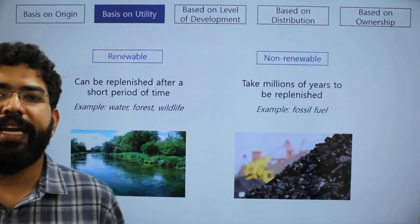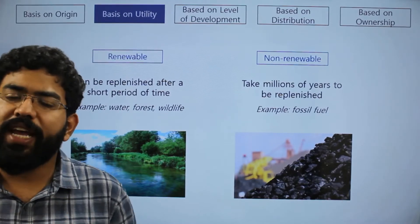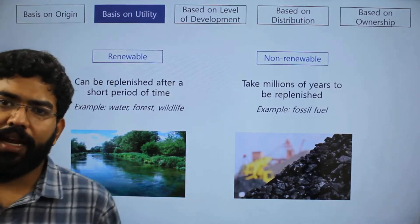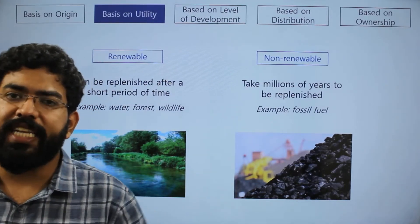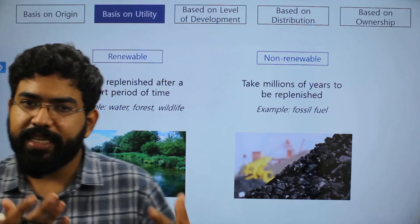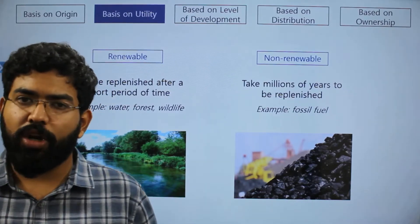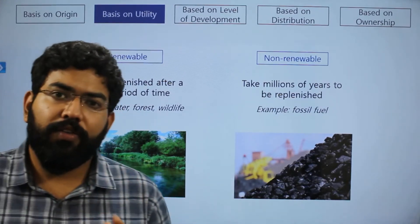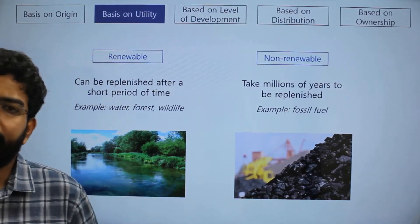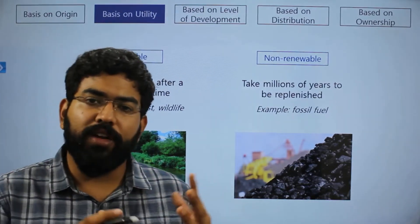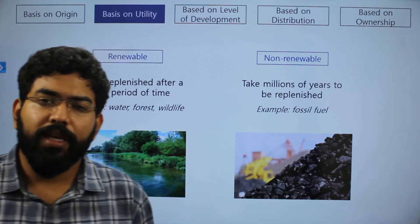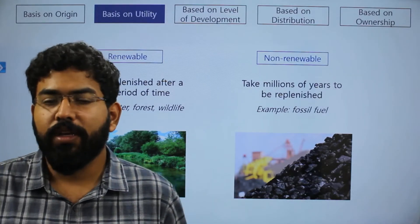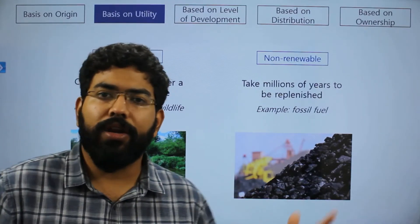Based on utility, resources are divided into renewable and non-renewable depending on how quickly they can be replenished. Water, for example, is replenished through the hydrological cycle — rivers keep flowing — so it is a renewable resource. On the other hand, oil and coal, once used, are gone; coal takes millions of years to form, making it a non-renewable resource.